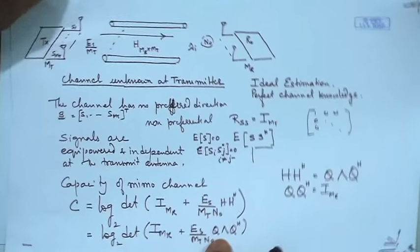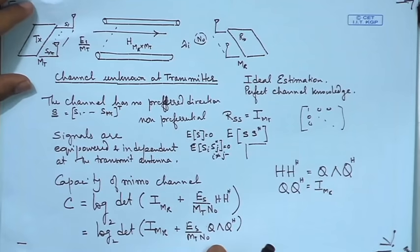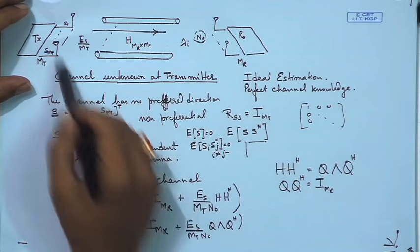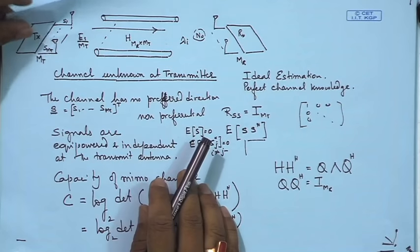Welcome to the lectures on fundamentals of MIMO wireless communication. In the previous lecture we have seen the capacity of MIMO systems when the channel is not known at the transmitter. Now we will take a look at the capacity when the channel is known at the transmitter. Basically we will use the figure from the previous lecture, but now we have a feedback in the system.